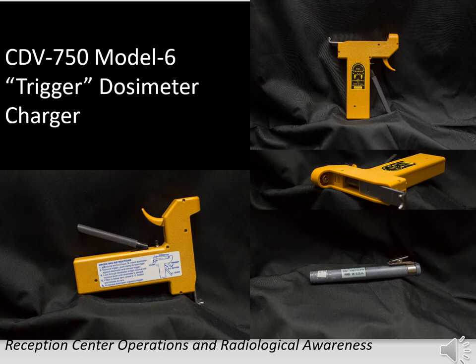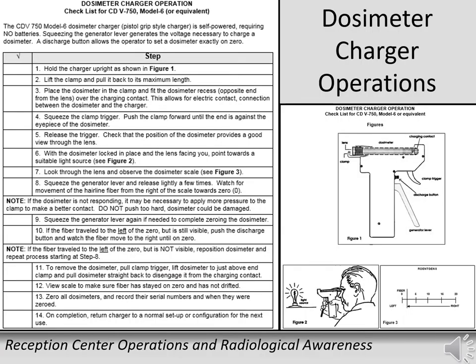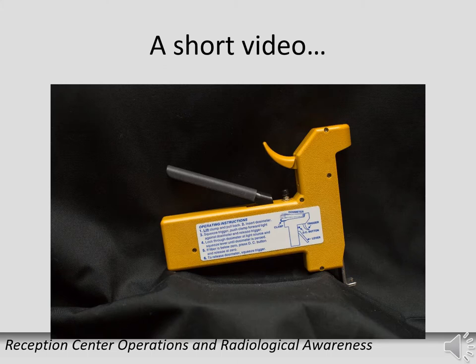The trigger charger is the device used to re-zero the dosimeter. A checklist is available for this process and can be found in the Radiological Information and Control binder. Follow the steps provided and watch the video that demonstrates use of the trigger charger.